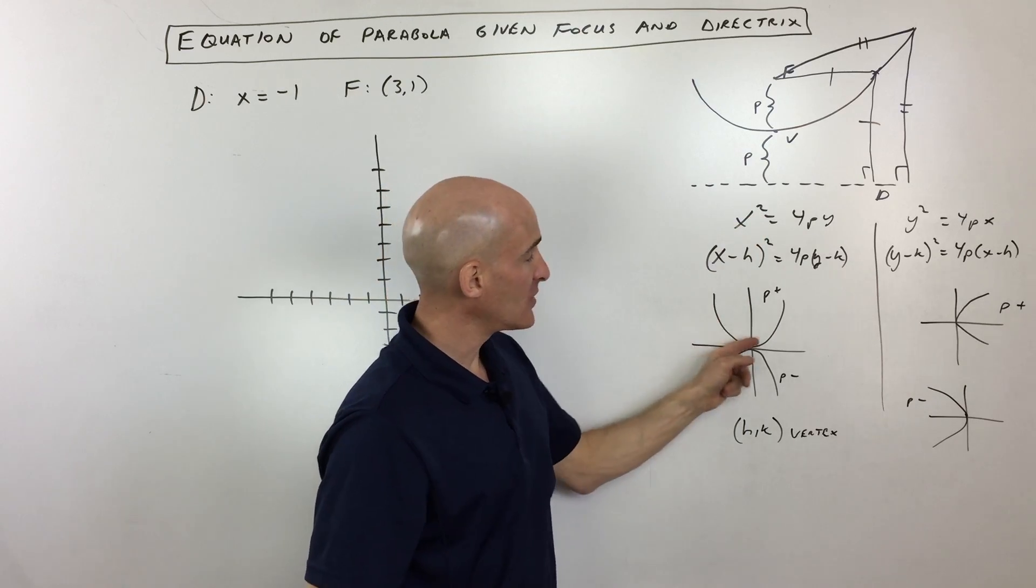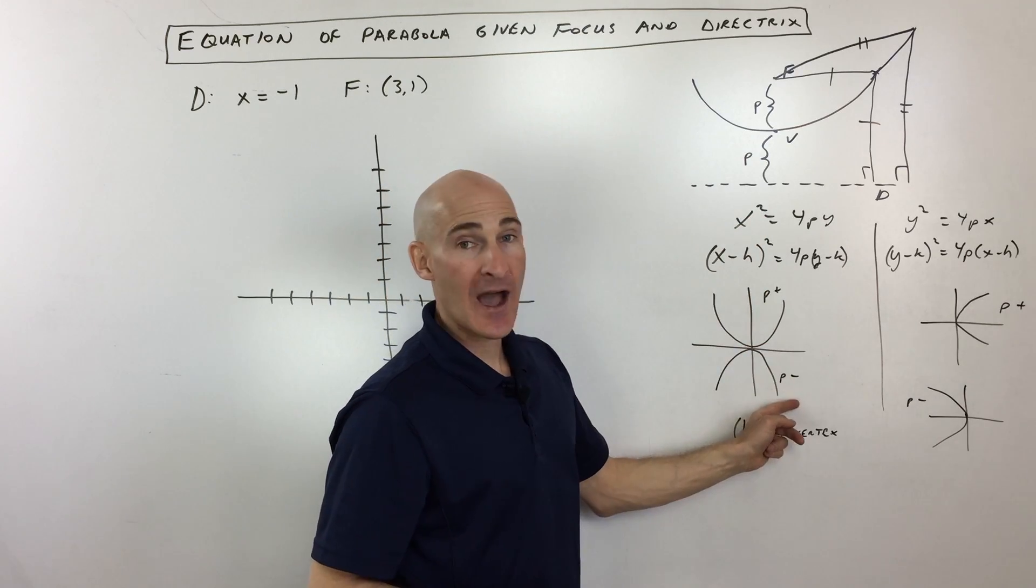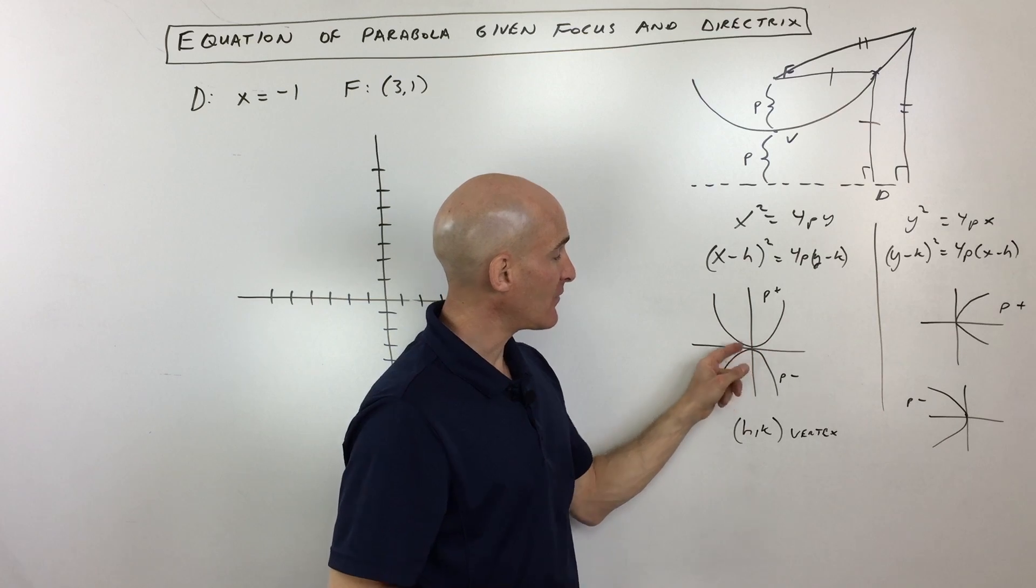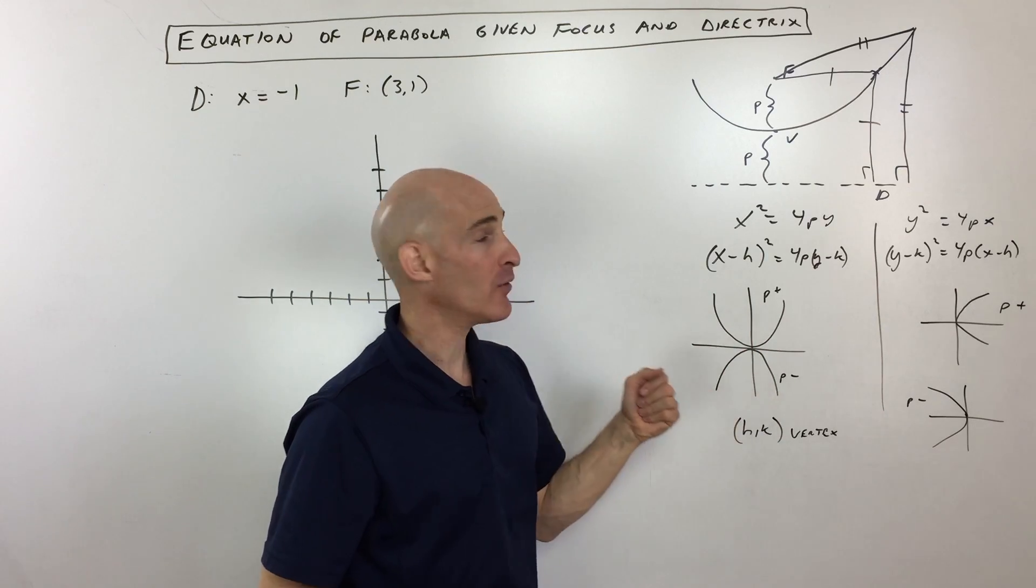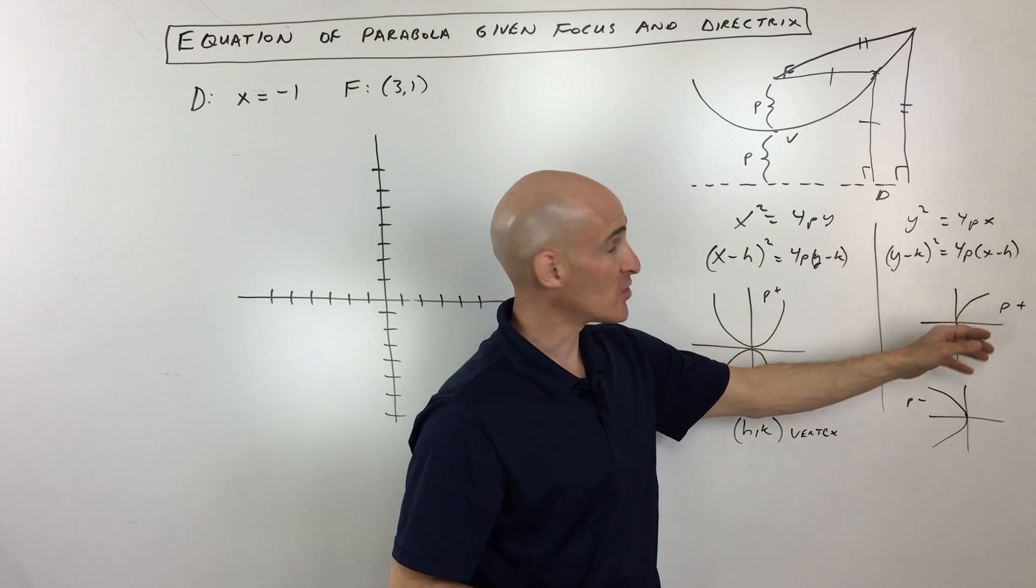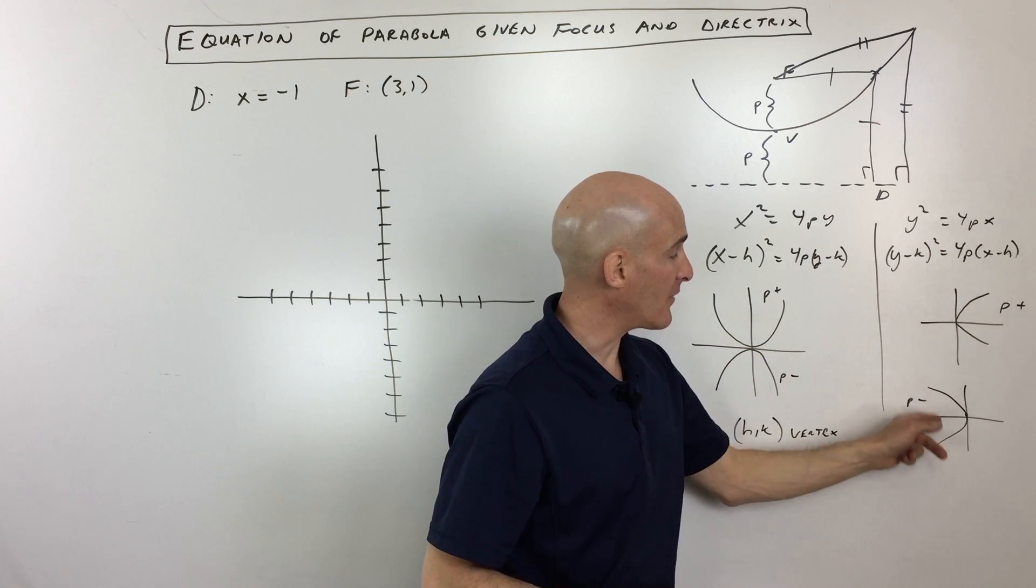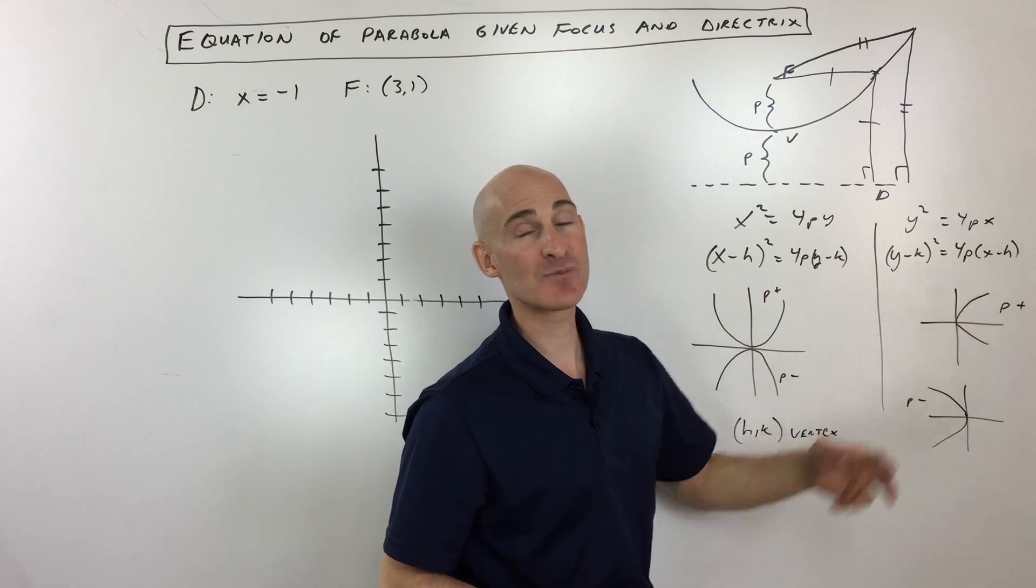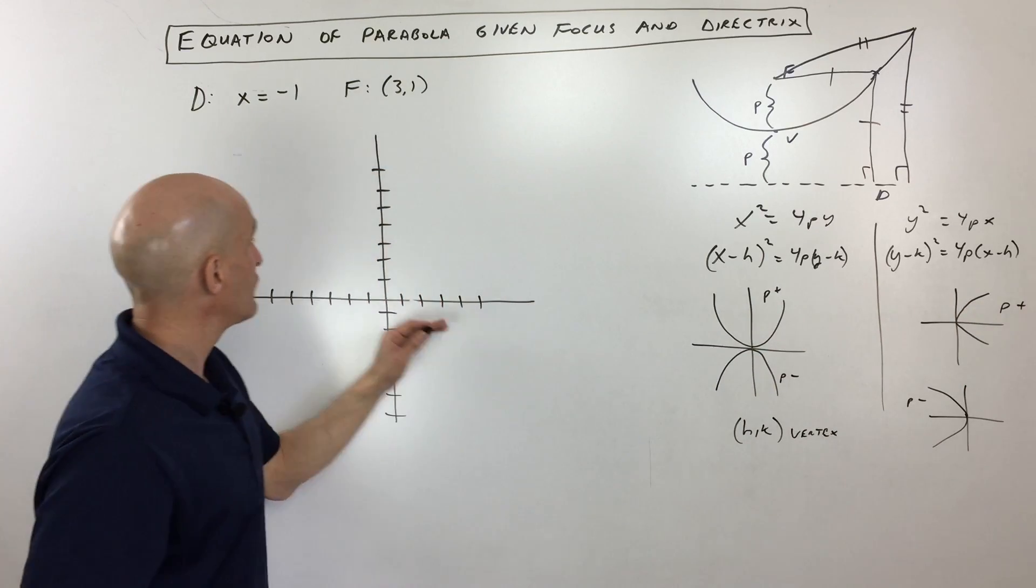But the key thing to remember is that if the x term is squared, that means the parabola is going to be opening either up or down. If p is positive, it's opening up, but if p is negative, it's opening down. And then for y squared, if you have a y squared term but not an x squared term, that means it's opening to the right or the left—left if p is negative, right if p is positive.